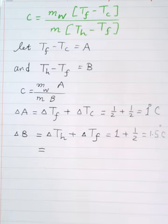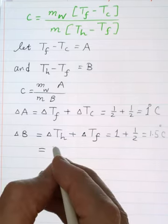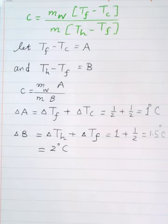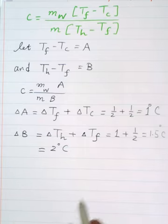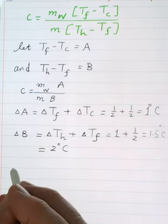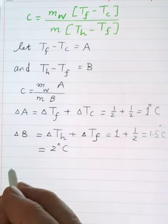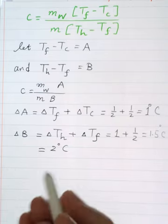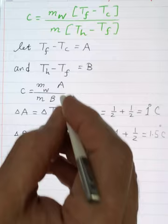That means error must be one significant digit, so it is 2 degree Celsius. So now we go back to our equation, to this equation.